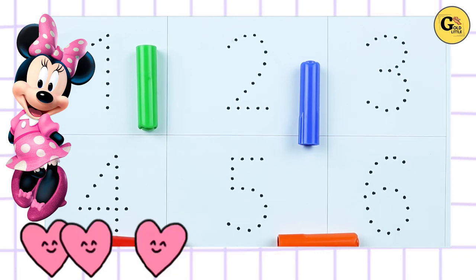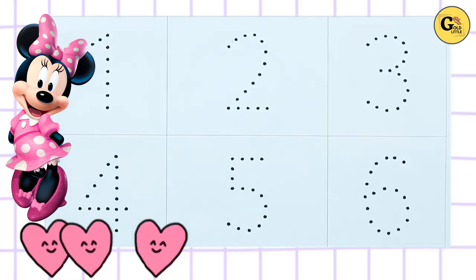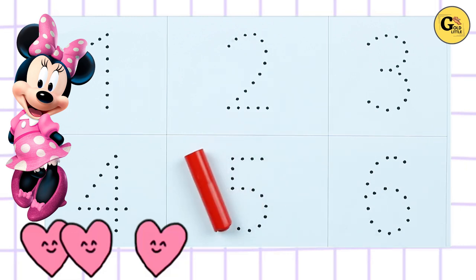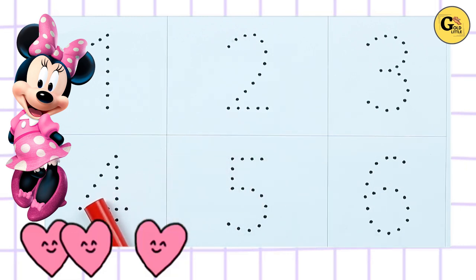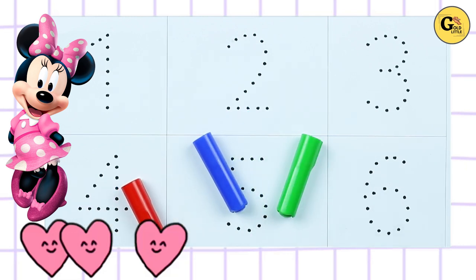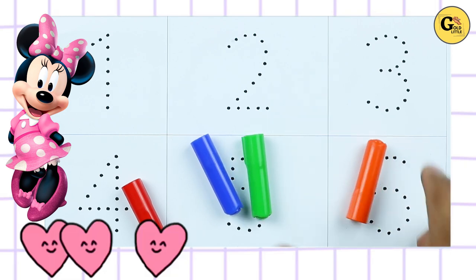Hello friends! Today we learn numbers 1 to 10 with some colors: red color, blue color, green color, orange color.